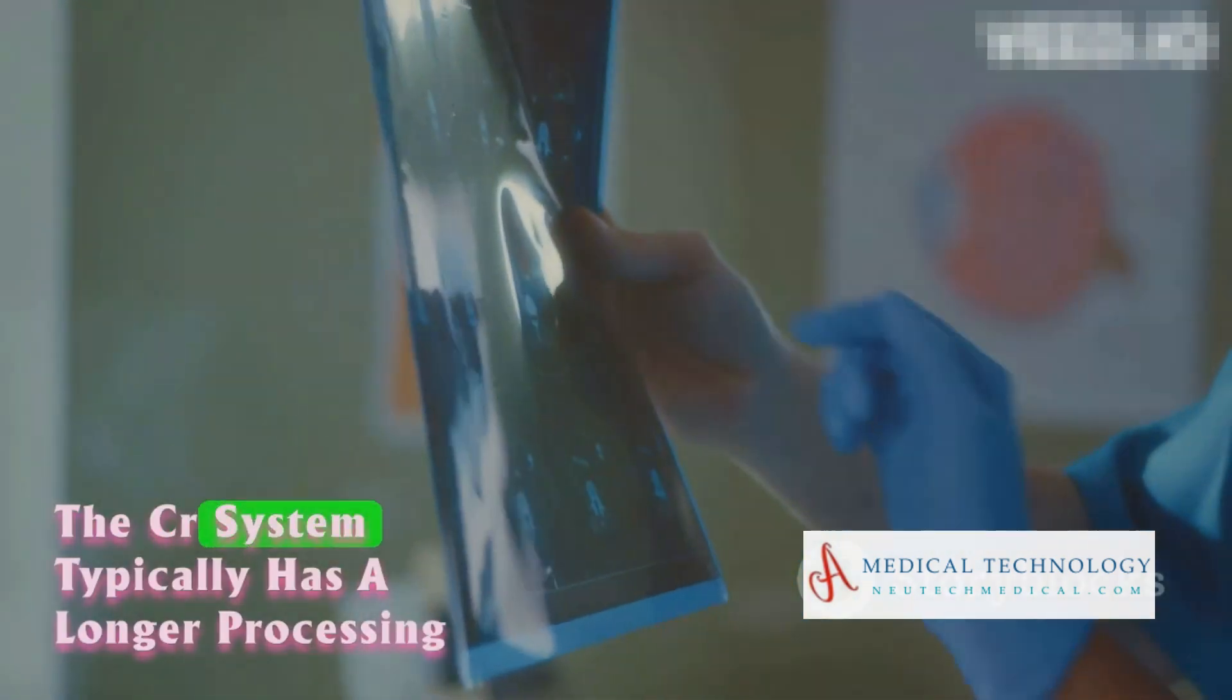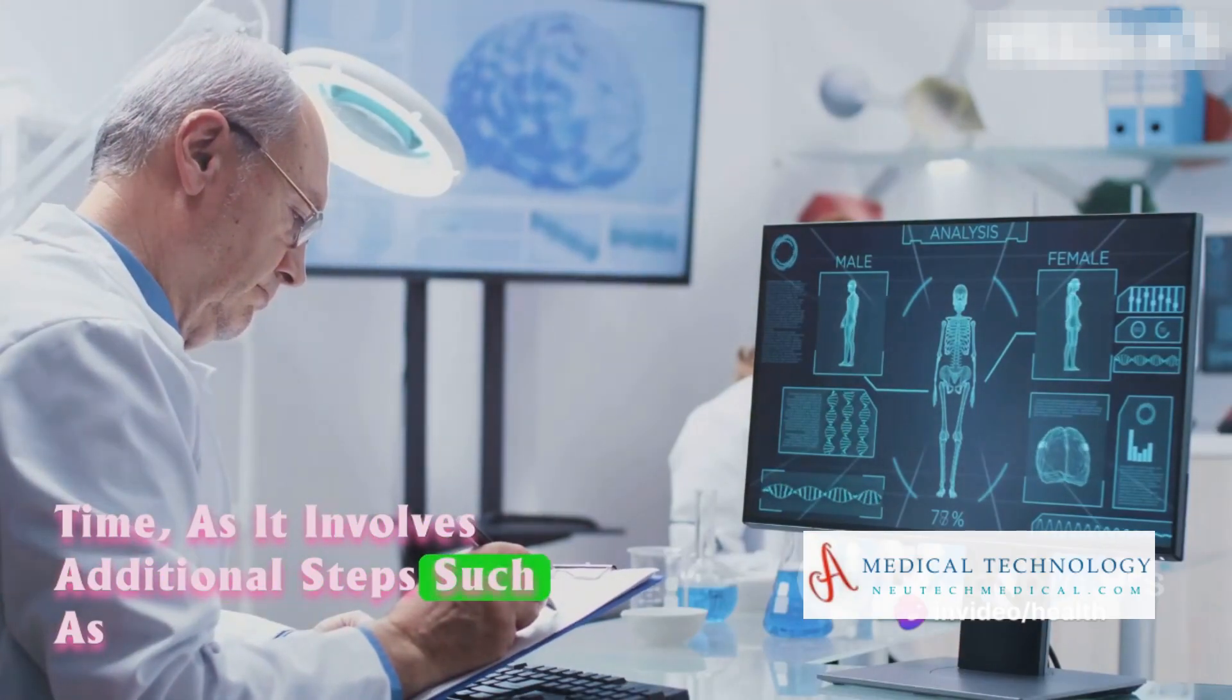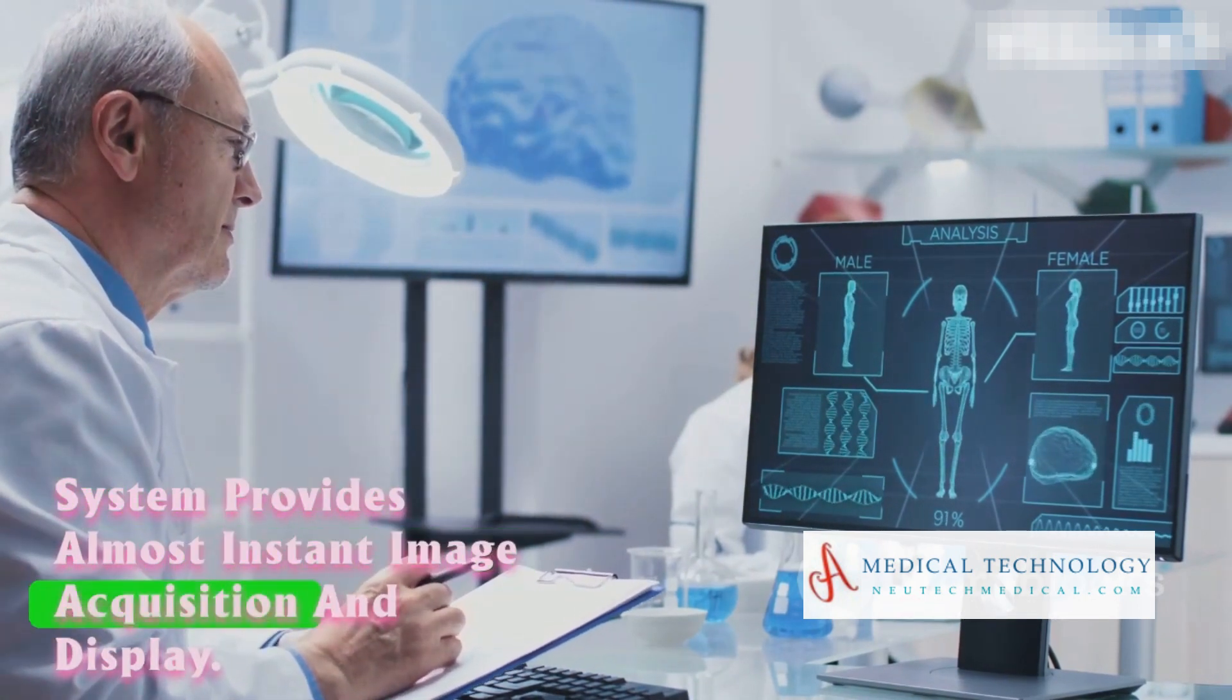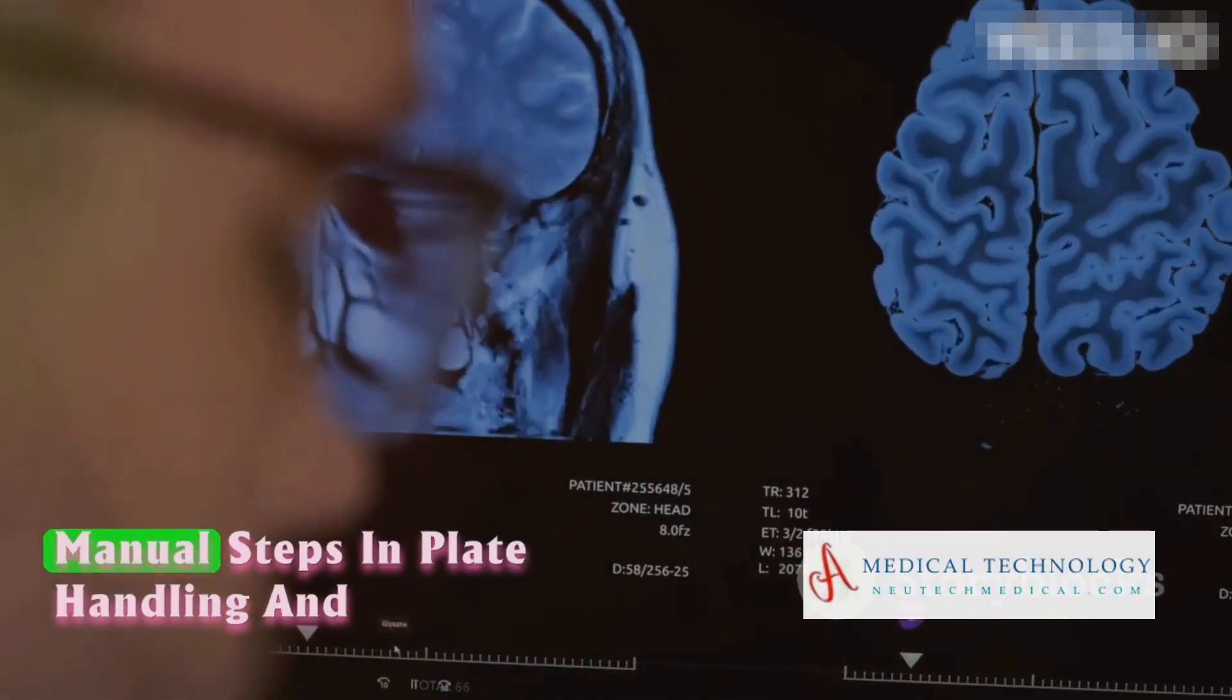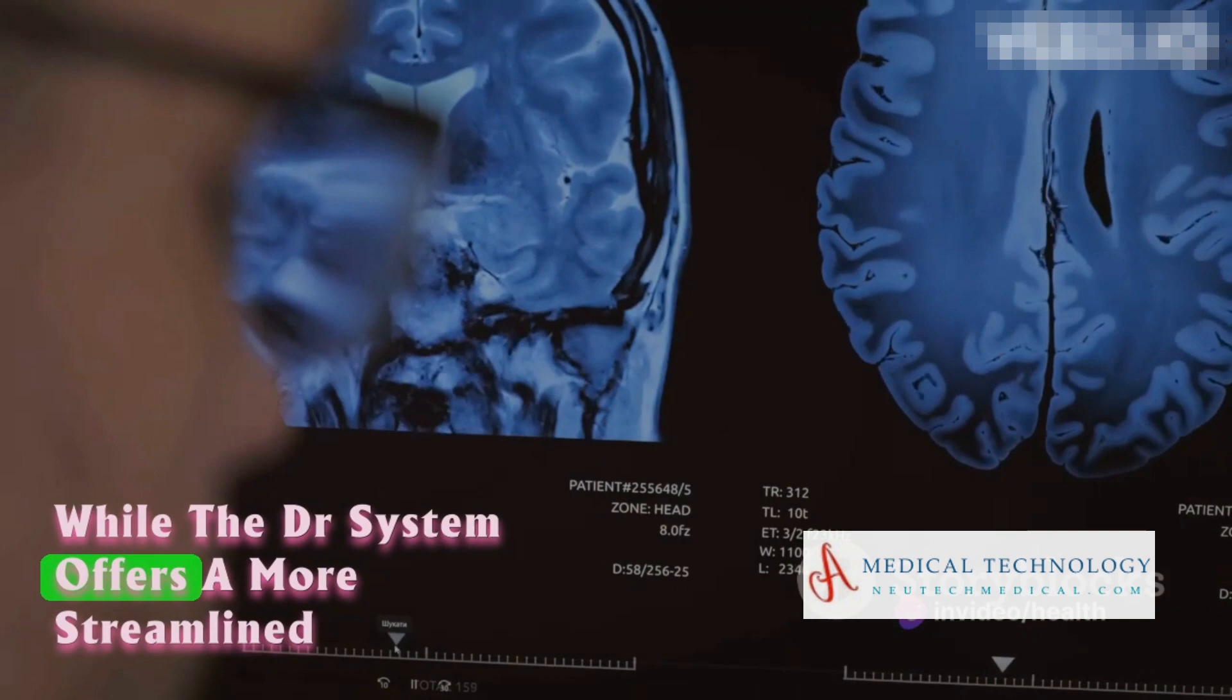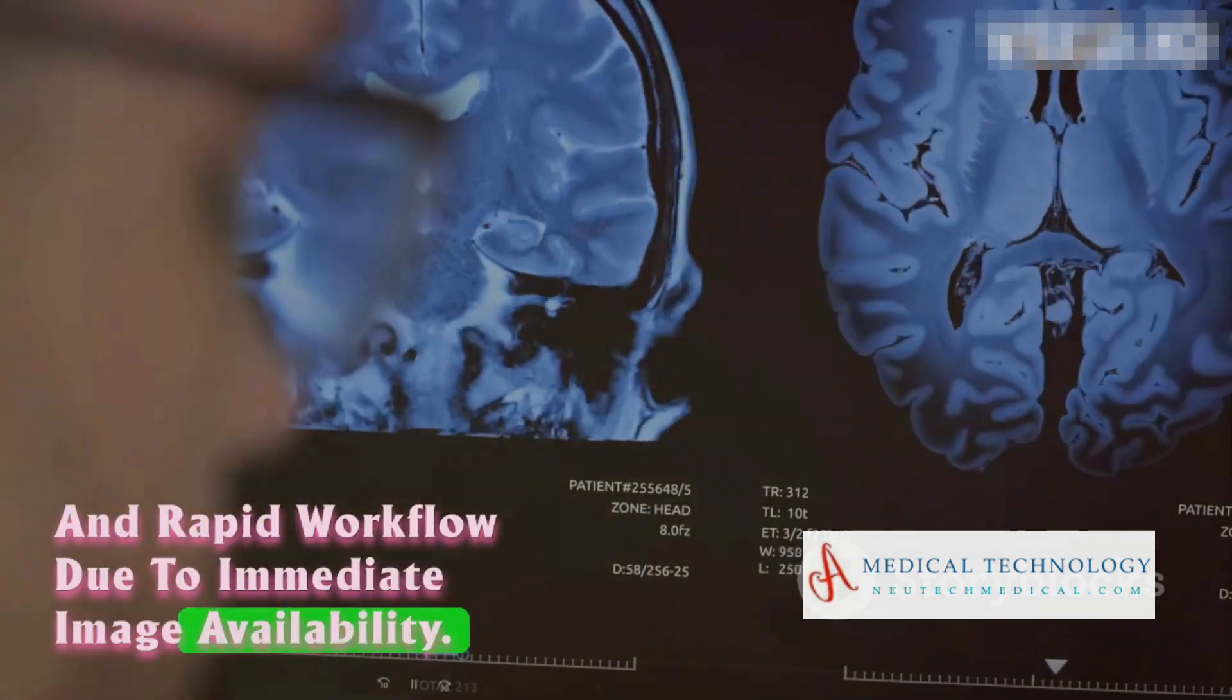The CR system typically has a longer processing time, as it involves additional steps, such as plate scanning and laser reading, while the DR system provides almost instant image acquisition and display. The CR system may require more manual steps in plate handling and processing, potentially impacting workflow efficiency, while the DR system offers a more streamlined and rapid workflow due to immediate image availability.